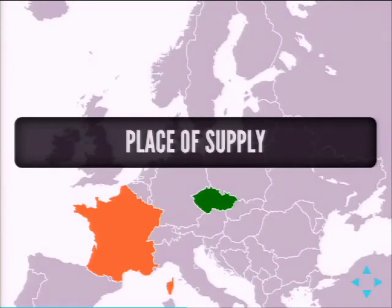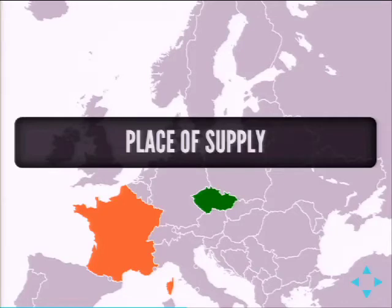We also have the problem of place of supply. If we are a Czech company giving Git trainings and we travel to Paris for a conference, our place of supply has changed to France — meaning the VAT we need to charge is the French rate, not the Czech one. I need to know all French VAT rates, know which ones apply to my product, and charge them instead based on where I'm actually providing my service.